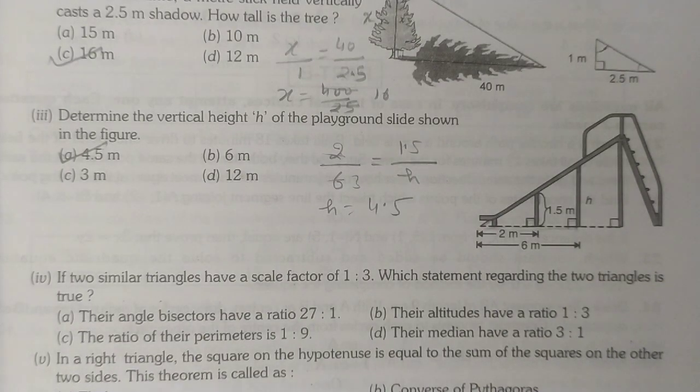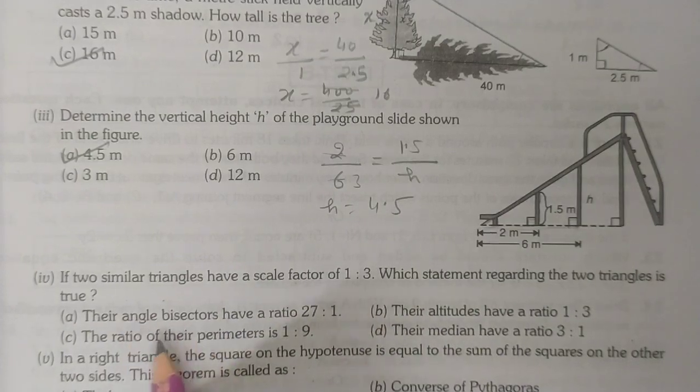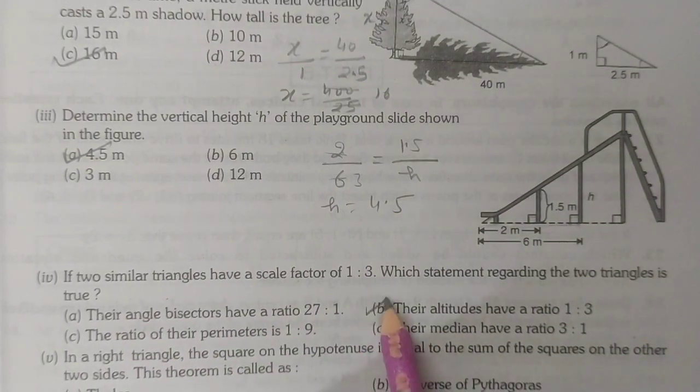This is the correct option because their altitudes ratio is also 1 is to 3. Now the last one: in a right triangle, the square on the hypotenuse...